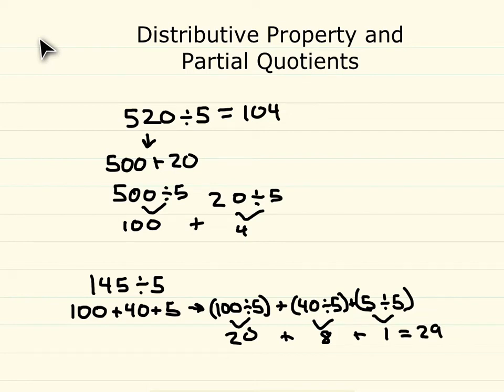So 145 divided by 5 is 29. So those are two examples on how to use distributive property and partial quotients to do division. Let's quickly look at one more example.